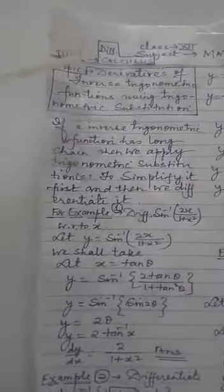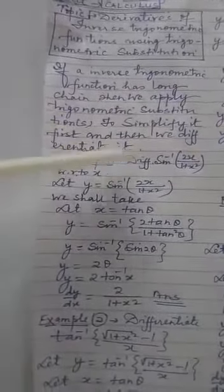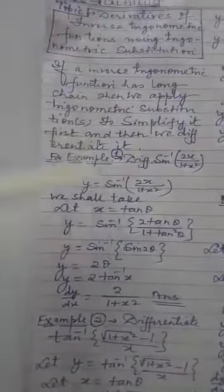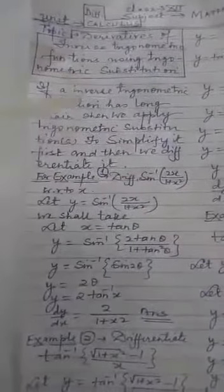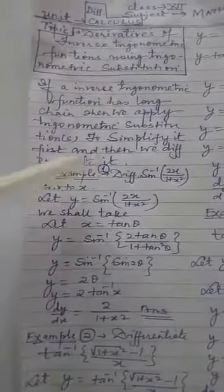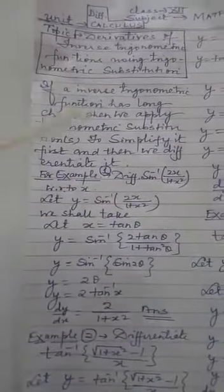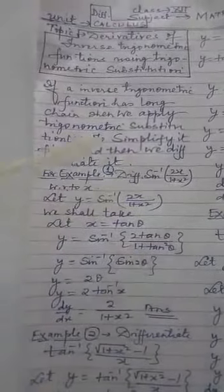Class 12 Mathematics, Unit: Differential Calculus. Topic: Derivative of inverse trigonometric functions using trigonometric substitution. If an inverse trigonometric function has a long chain, we apply trigonometric substitution to simplify it first and then differentiate it, because continuous application of the chain rule makes the process of differentiation complicated when the chain is very large. Therefore, applying trigonometric substitution and simplifying gives us the function in simple form.